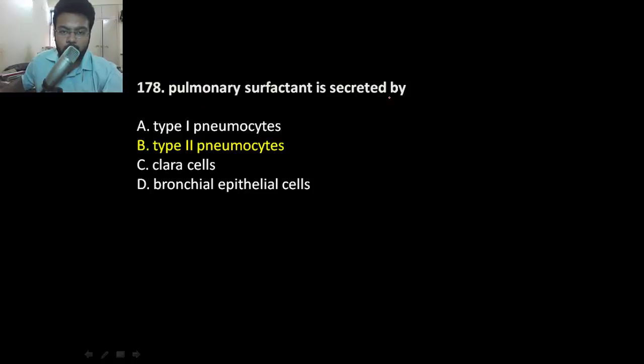Pulmonary surfactant is secreted by type 2 pneumocytes. Clara cells are present especially in the bronchioles exclusively. In the bronchioles. And it secretes substance similar to pulmonary surfactant, which protects the bronchial epithelial cells.